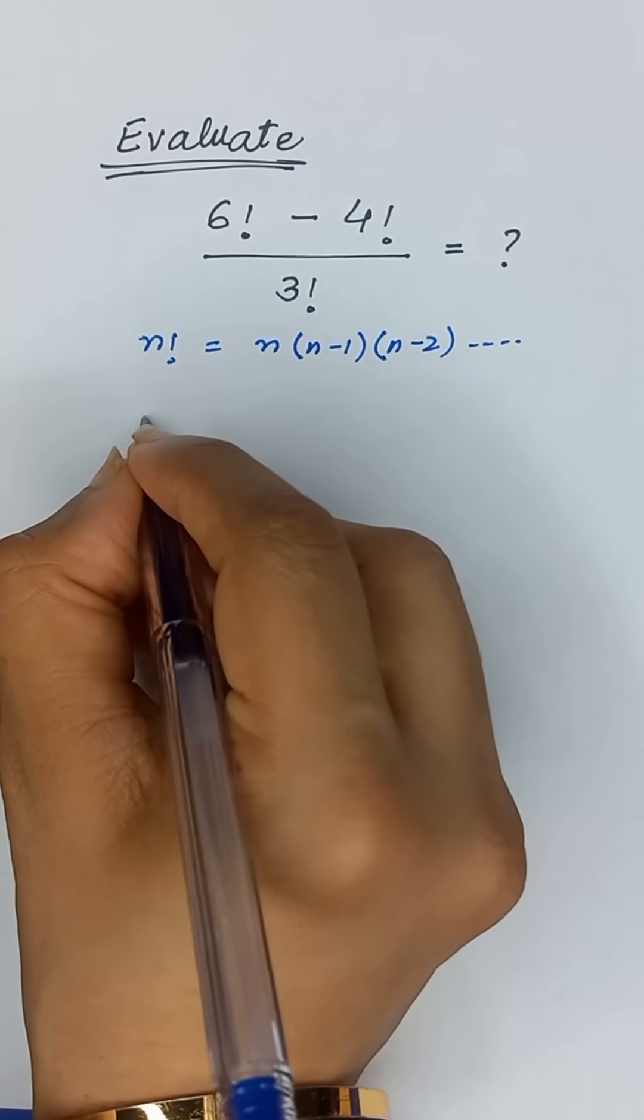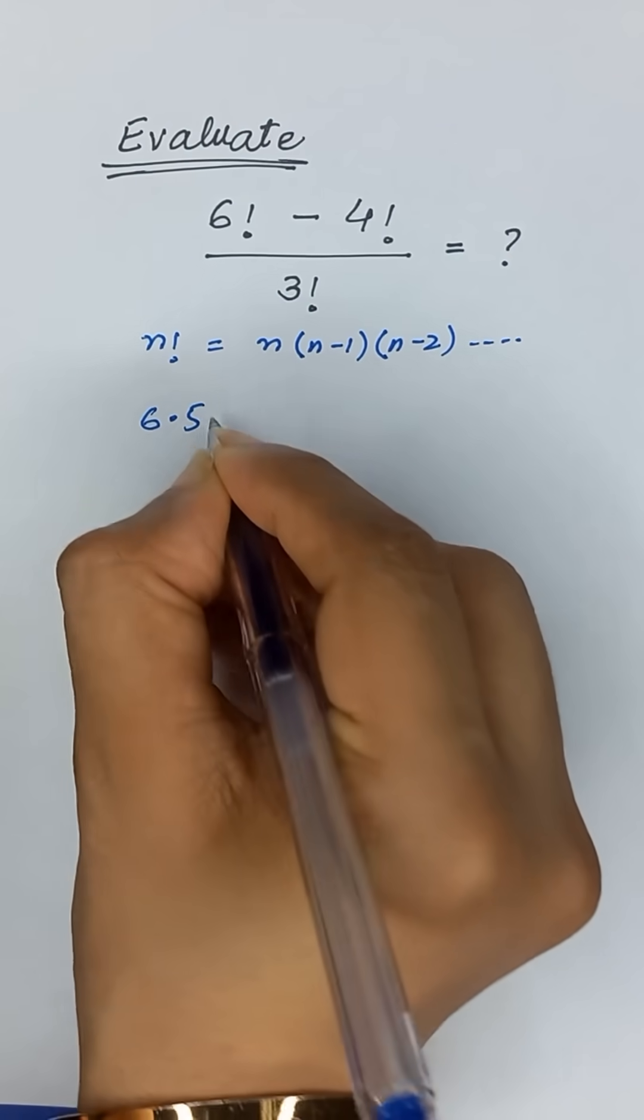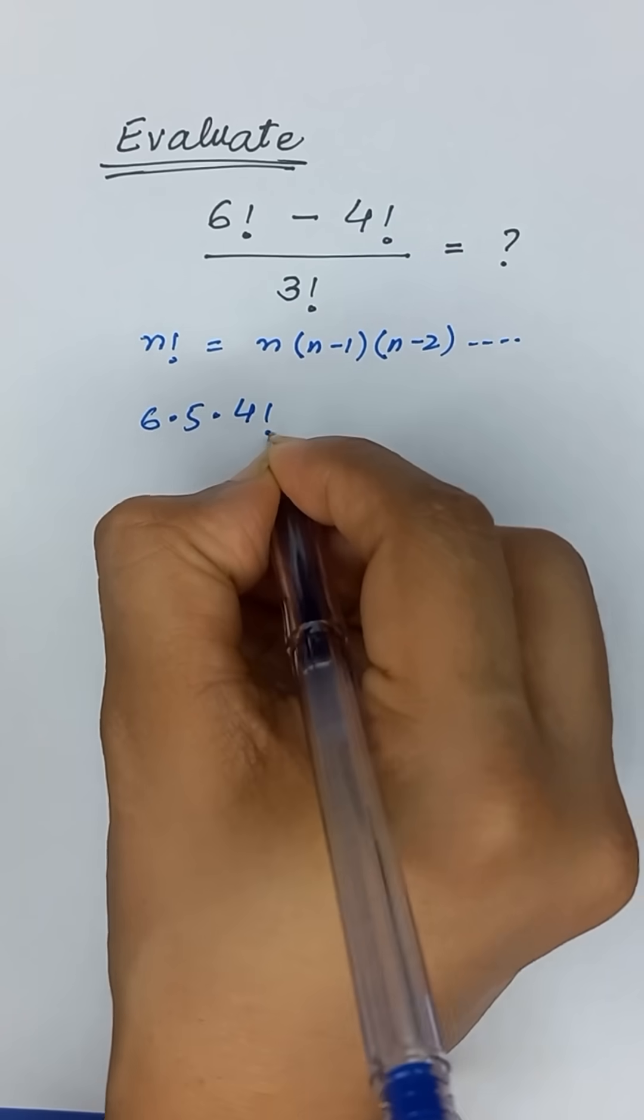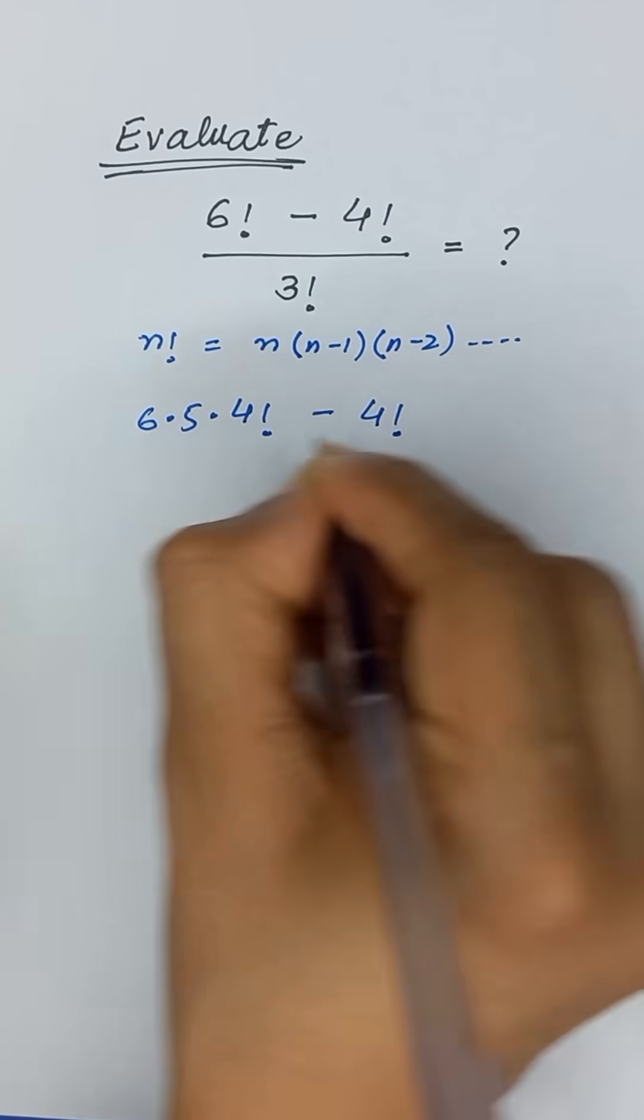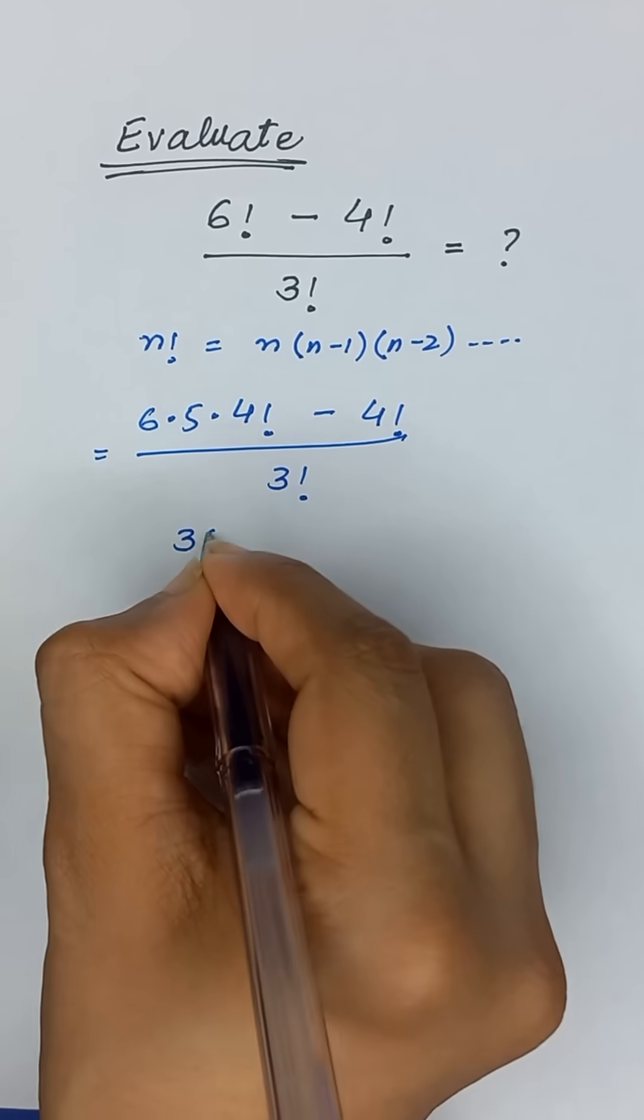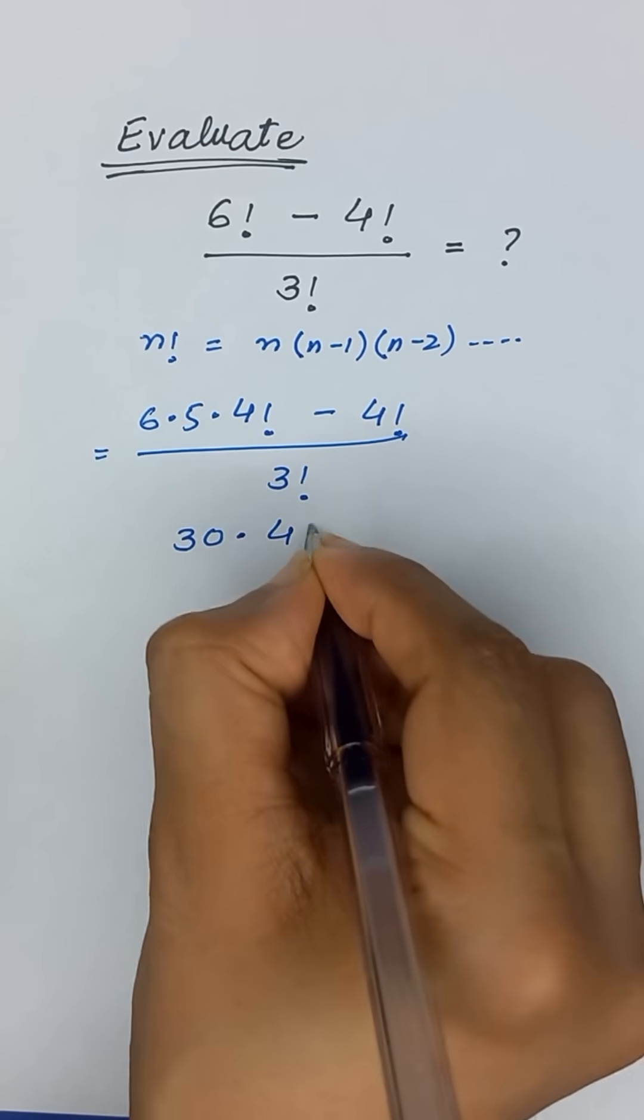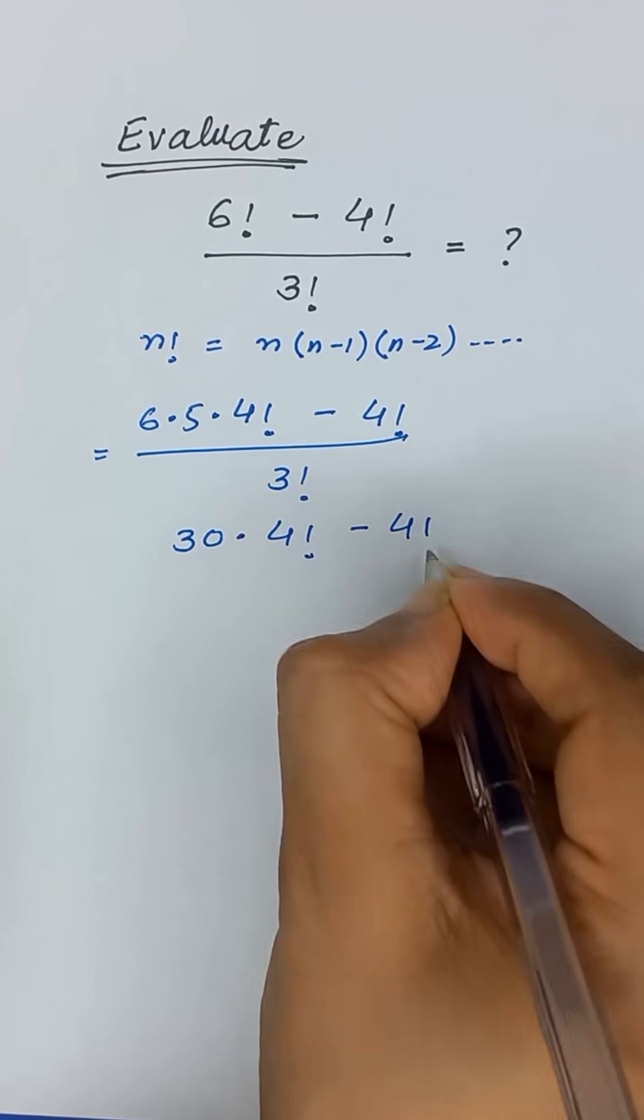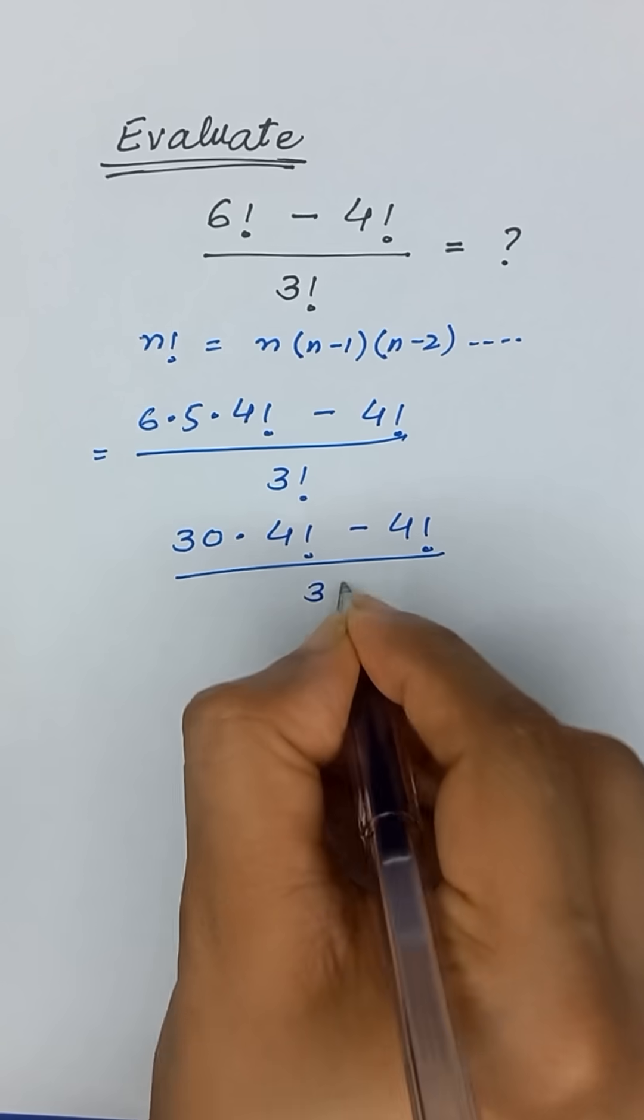So 6 factorial can be written as 6 times 5 times 4 factorial minus 4 factorial divided by 3 factorial. 6 times 5 is 30, so it will become 30 times 4 factorial minus 4 factorial divided by 3 factorial.